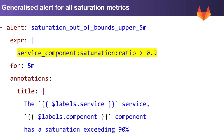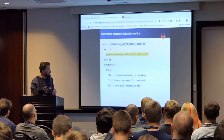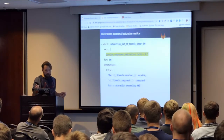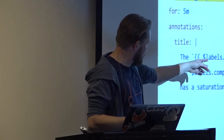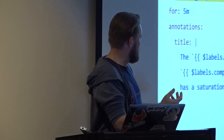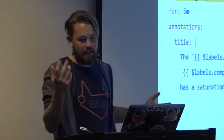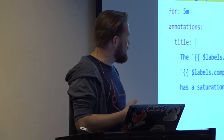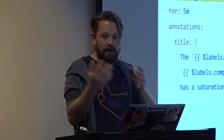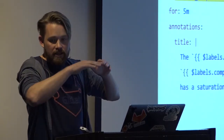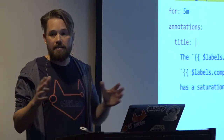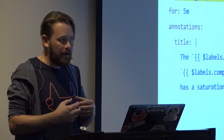This is the AlertManager rule we use to do that, and it's super simple. What it says is that for any saturation metric with any service or any labels, if it exceeds 90% for more than five minutes, trigger an alert. The title will be something like 'Redis service CPU component saturation level exceeding 90%.' So instead of having one alert for CPU, one for Unicorn workers, and one for memory, we just have a single alert that covers the entire system. It's really simple to understand, comprehend, and manage.